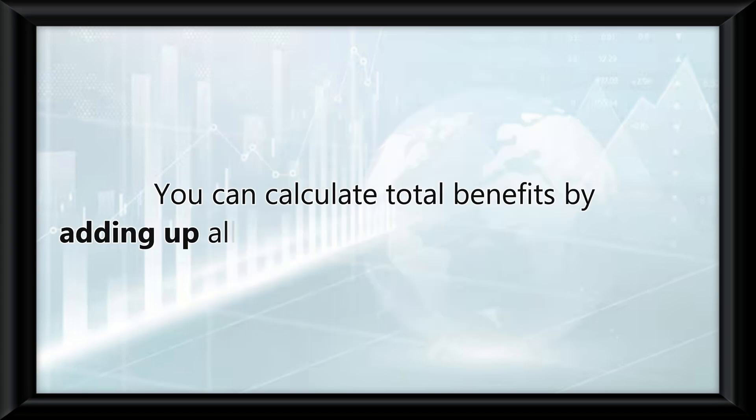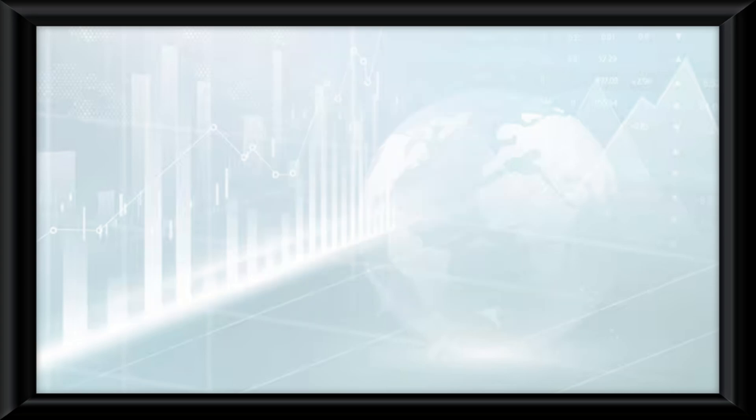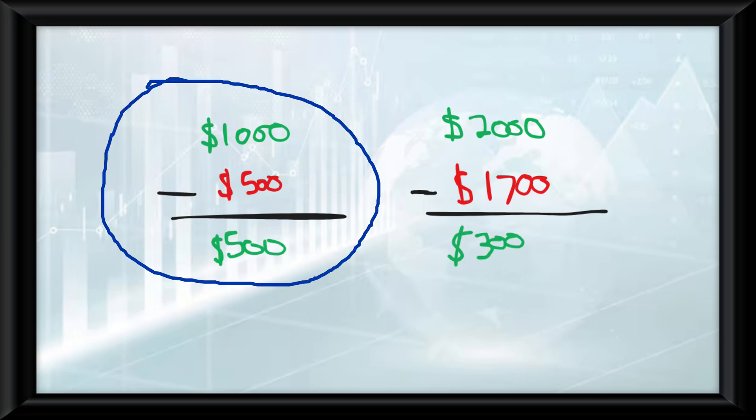You can calculate total benefits by adding up all the positive gains from a decision. Similarly, total costs include all expenses or sacrifices. For instance, if starting a business brings in $500 in revenue but costs $300 in expenses, the net benefit is $200. The optimal choice is where the difference between what you gain and what you lose is the greatest.